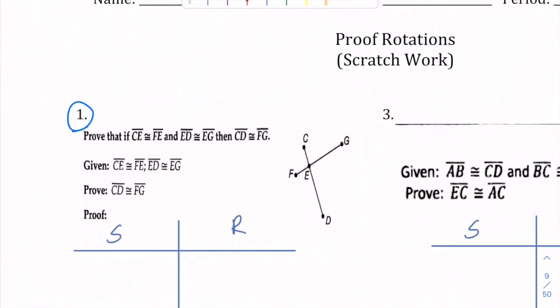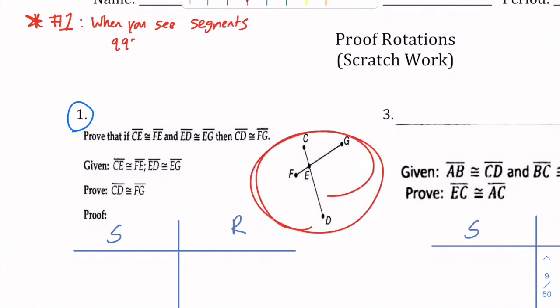Before we even start, I want to highlight 3 big proof tips. Tip number 1: when you see segments, 99% of the time you will use segment addition postulate. You will use that in your proof 99% of the time. So if you're already stuck, you just use that theorem for your next line.